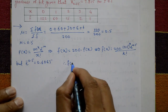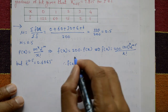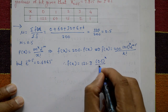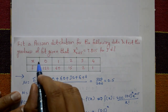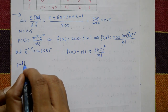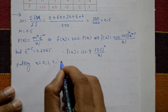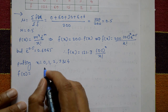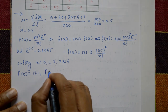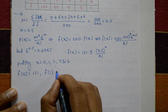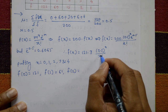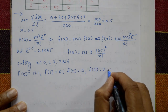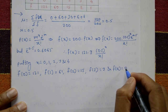The expected frequency f(x) equals 200 × p(x), which gives 121.3 × 0.5^x / x!. Putting x = 0, we get approximately 121. For x = 1, approximately 61. For x = 2, approximately 15. For x = 3, approximately 3. For x = 4, approximately 0.